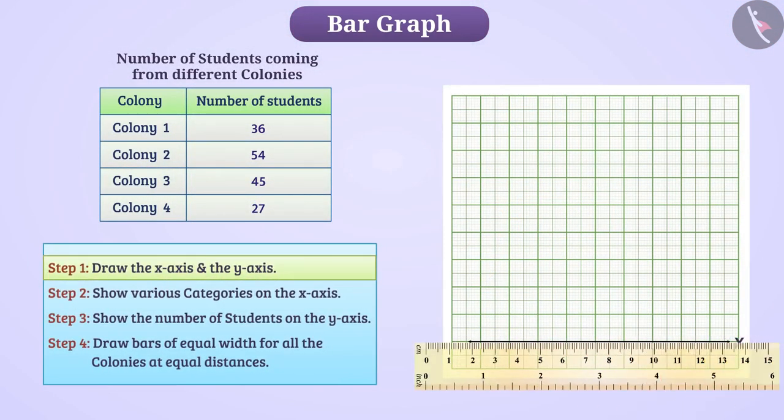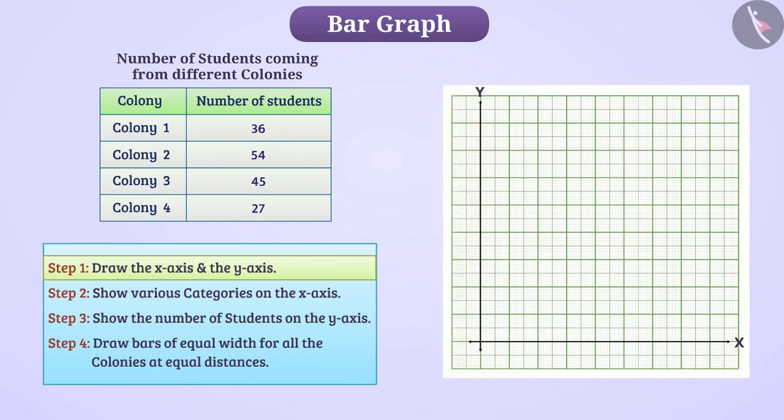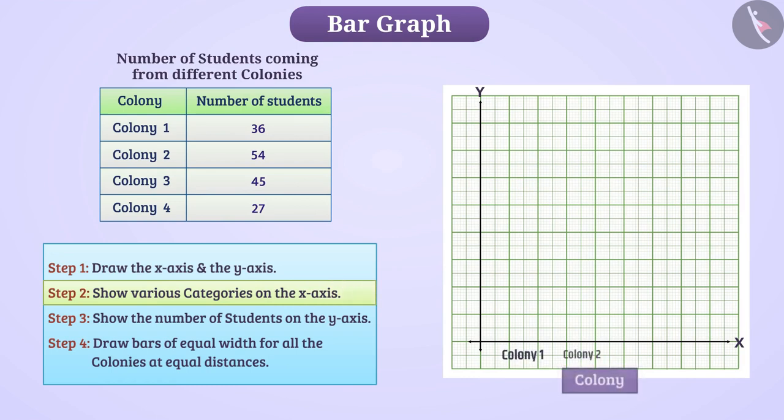First, we will draw the x-axis and the y-axis. Now, we will show various categories on the x-axis like here, name of colonies.